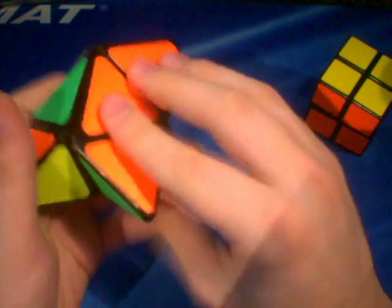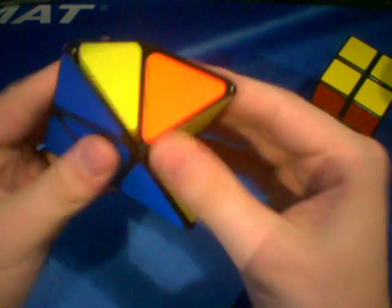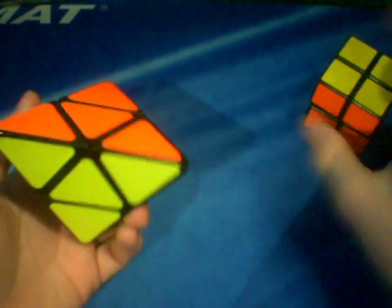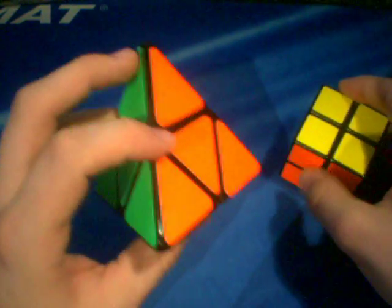And it's a little harder to do the finger tricks, but you can still do it. And there you go. It's solved. Really, if you can solve the 2x2, the Pyramorphings isn't that different.